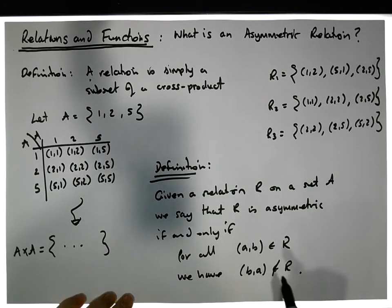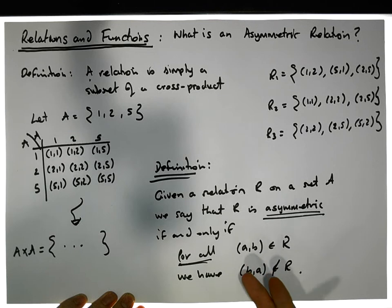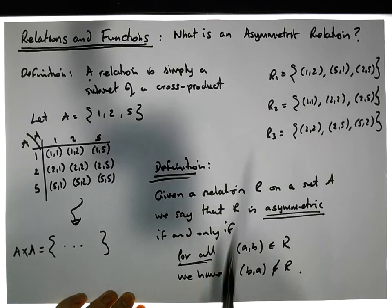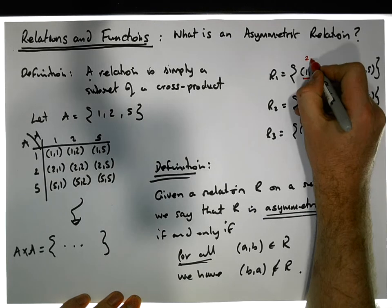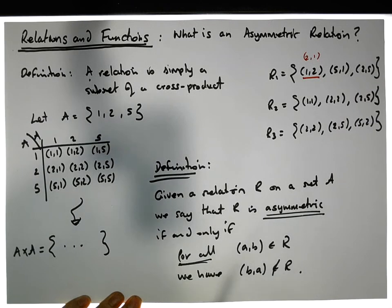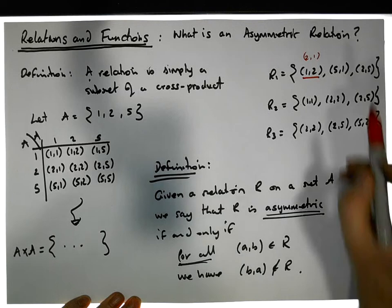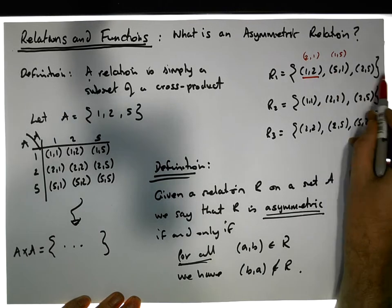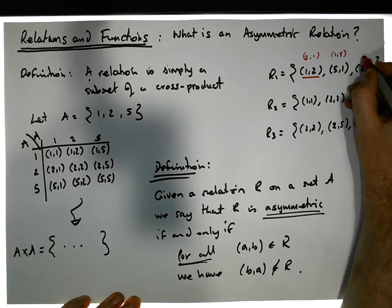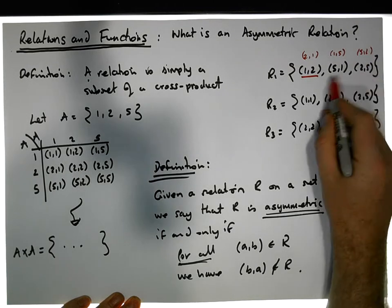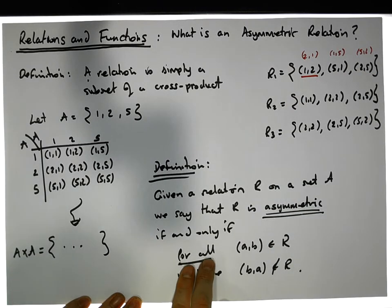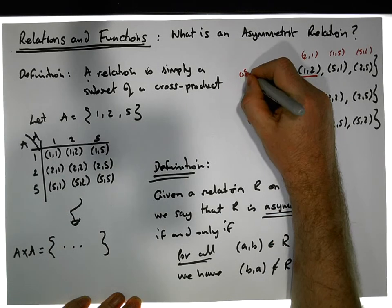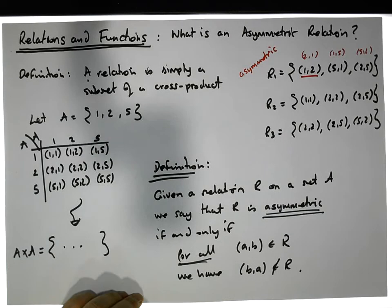To check whether a relation is asymmetric, we go through every ordered pair and ensure that its flip is not in the relation. Looking at R1: (1,2) flipped gives (2,1) — not in R1, good. (5,1) flipped gives (1,5) — not in R1, good. (2,5) flipped gives (5,2) — not in R1 either. Every flip is absent from the relation, so R1 is asymmetric.